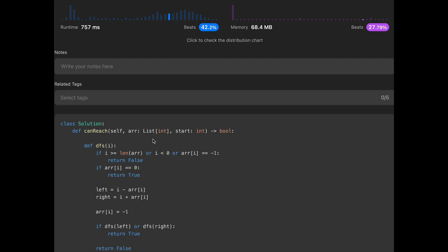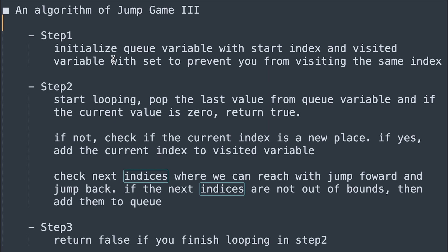Step-by-step algorithm summary for Jump Game 3: Step 1 — initialize q with start index and visited set to prevent revisiting the same index. Step 2 — loop: pop from q, if current value is 0 return true; if new place, add to visited and enqueue valid jump-forward and jump-back indices. Step 3 — return false if the loop completes. I hope this video helps — please subscribe, like, or leave a comment!